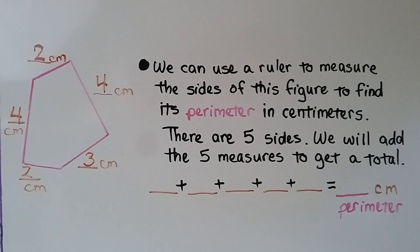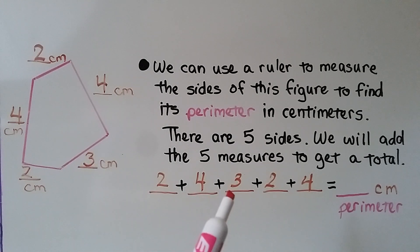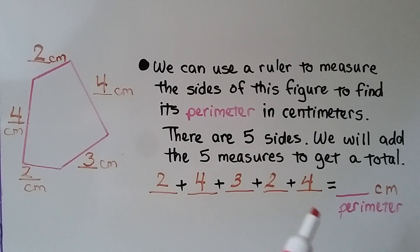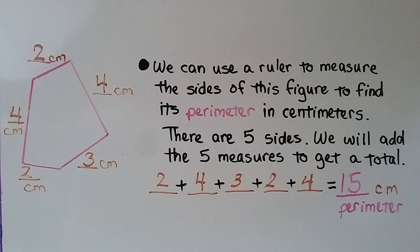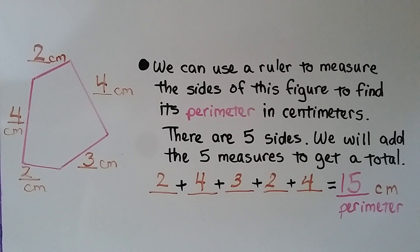Now we can take these 5 measures, add them up, and get a total. We have 2 plus 4 plus 3 plus 2 plus 4, which equals 15. We know the perimeter for this shape is 15 centimeters.